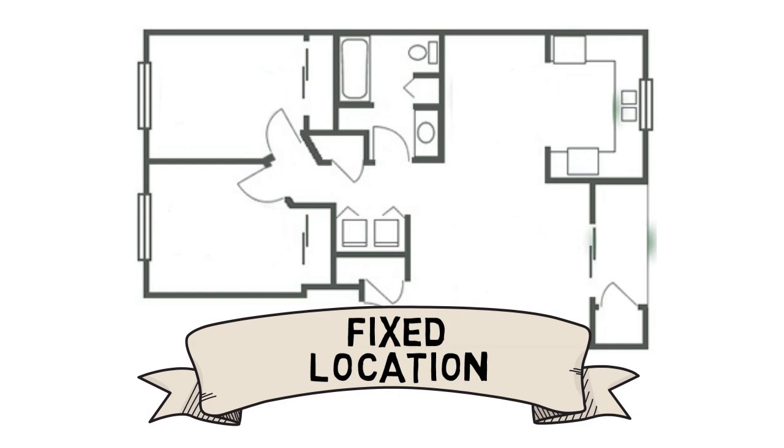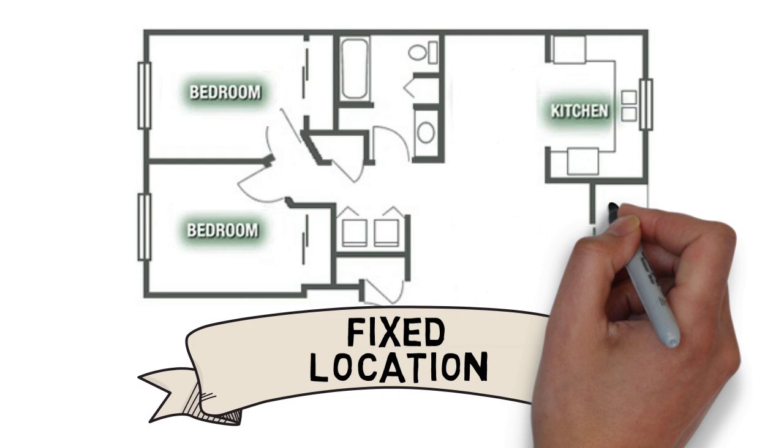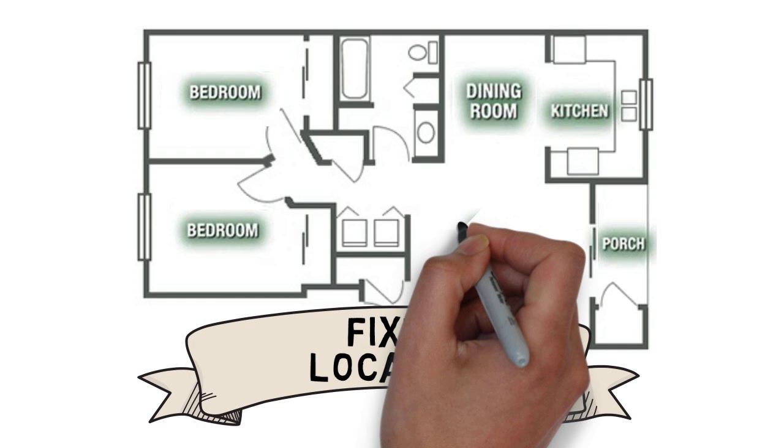For example, the two bedrooms are positioned here, the kitchen and porch positioned here, and so on. So having a fixed location would allow the ease of locating a certain compartment or activity within the apartment.